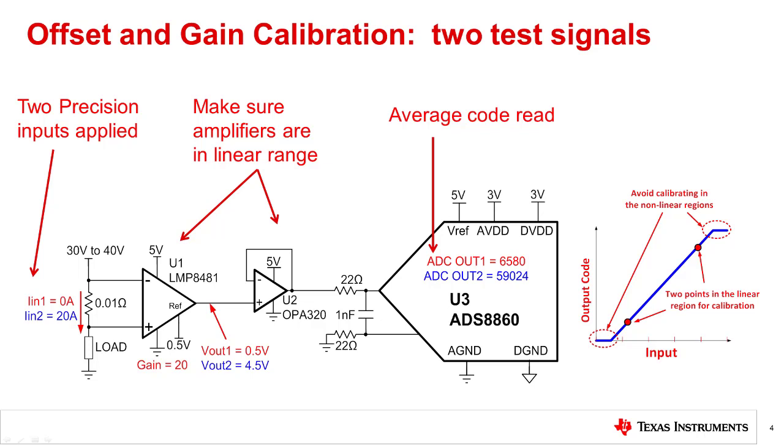After calibration, the measured slope and measured offset, called calibration coefficients, are generally stored in the microcontroller's memory. These coefficients are then used during normal device operation to compensate for the gain and offset error. On the next slide, we will look at the math for this example.